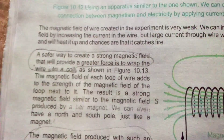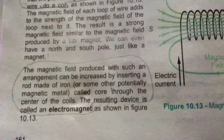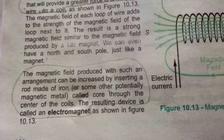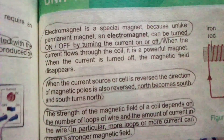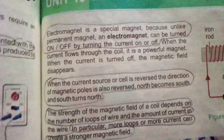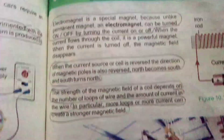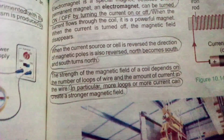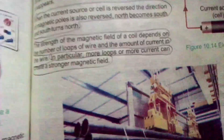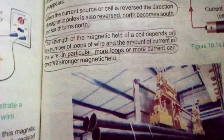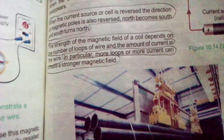A safer way to create a strong magnetic field that will provide a greater force is to wrap the wire into coils. The magnetic field produced with such an arrangement can be increased by inserting a rod made of iron or some other potentially magnetic material called a core through the center of the coil. The resulting device is called an electromagnet. Unlike a permanent magnet, an electromagnet can be turned on and off by turning the current on and off. When the current is reversed, the direction of magnetic force is also reversed - north becomes south and south turns north. The strength of the magnetic field of a coil depends on the number of loops of wire and the amount of current in the wire.